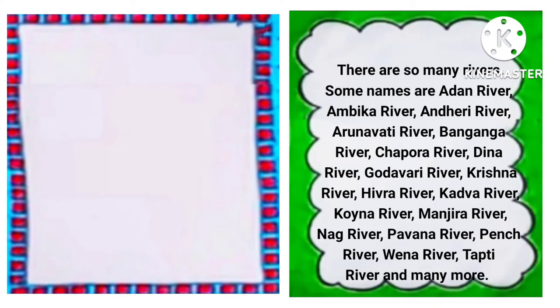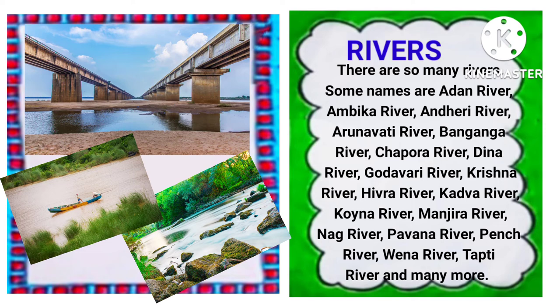Rivers: There are so many rivers. Some names are Adhan river, Ambika river, Andhiri river, Arunavati river, Banh Ganga river, Chapoura river, Deena river, Godavari river, Krishna river, Hevra river, Kadva river, Koena river, Manjeera river, Nag river, Pawana river, Pench river, Vena river, Tapti river and many more. And here are some pictures of rivers of Maharashtra state.